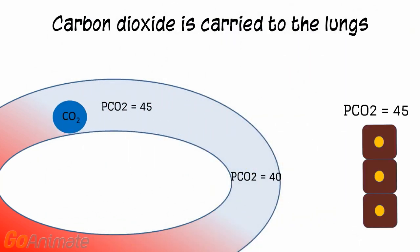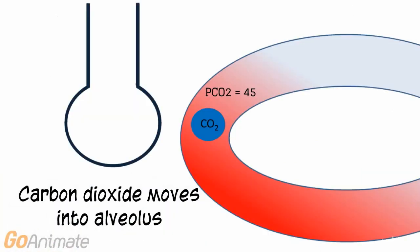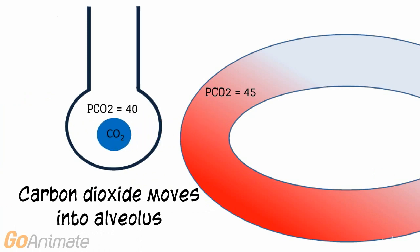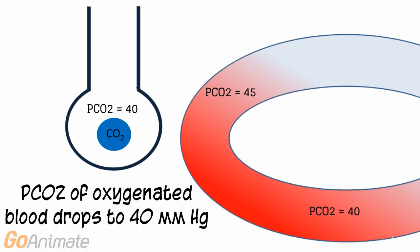Carbon dioxide is carried to the lungs. When carbon dioxide reaches the lungs, it meets an alveolar PCO2 of 40 mmHg. Carbon dioxide follows its partial pressure gradient and diffuses into the alveoli, causing the blood PCO2 to drop back to 40 mmHg.